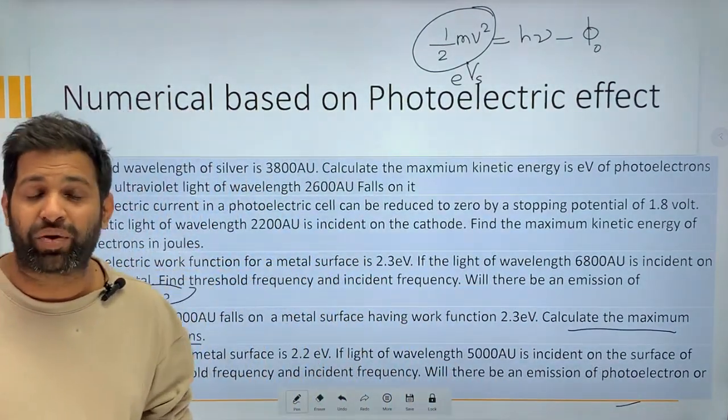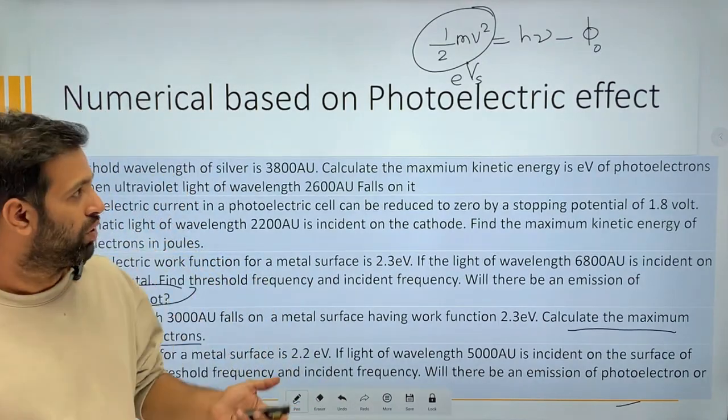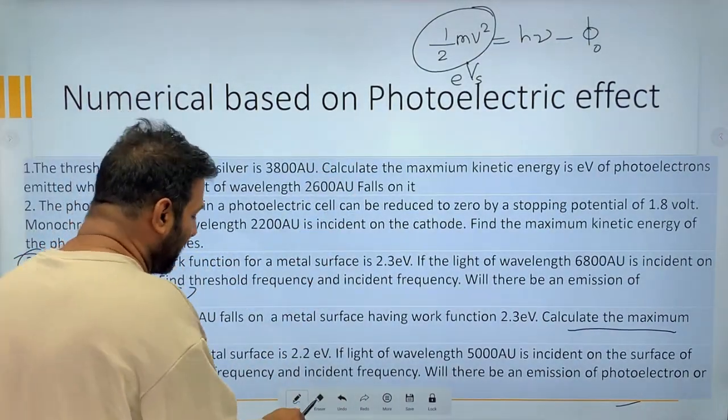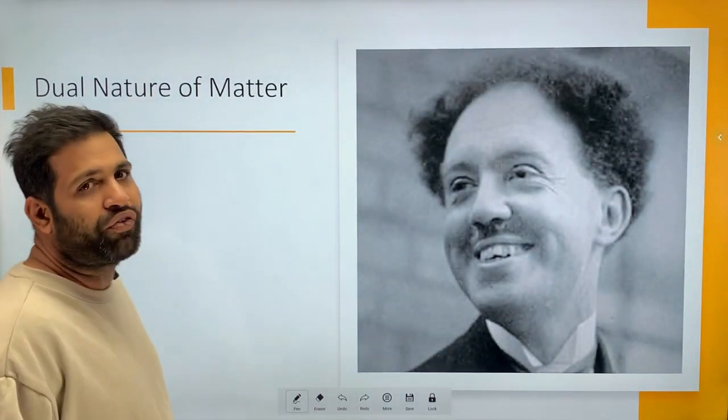Fine that is the formula right jo Einstein equation hai aur half mv square ke badle aapko e Vs likhta hai jab stopping potential ka samaj hai na half mv square ke badle sirf e Vs likhta hai sum solve ho jaye ga.